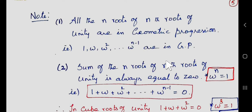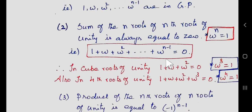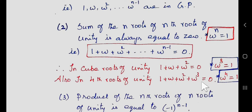The second property is that the sum of all the nth roots of unity is always equal to 0. So if we add all the nth roots of unity, we get the sum as 0. Particularly in cube roots of unity, 1 plus omega plus omega square equals 0. Likewise in fourth roots of unity, 1 plus omega plus omega square plus omega cube is 0. In nth roots of unity, omega power n equals 1, and in cube roots of unity, omega cube equals 1, so omega equals 1 to the power 1 by 3. Likewise, omega power 4 equals 1 in fourth roots of unity.